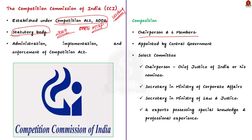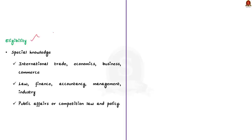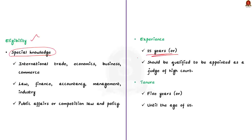The Commission consists of one chairperson and six members as per the Competition Act. All these members are appointed by the central government based on the recommendation of a selection committee, which is headed by the Chief Justice of India or his nominee. The other members include the Secretary in the Ministry of Corporate Affairs, the Secretary in the Ministry of Law and Justice, and two experts possessing special knowledge and professional experience. The chairperson and every other member shall be a person of ability, integrity and standing, who has been or is qualified to be a judge of a High Court, or has special knowledge and professional experience of not less than 15 years in international trade, economics, business, commerce, law, finance, accountancy, management, industry, or public affairs.